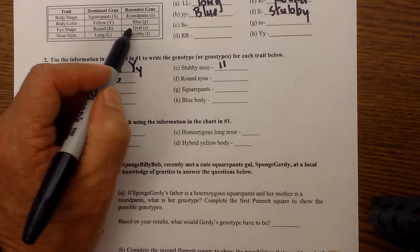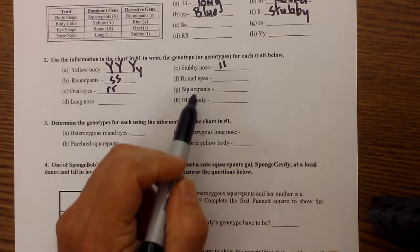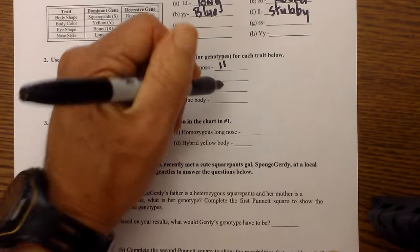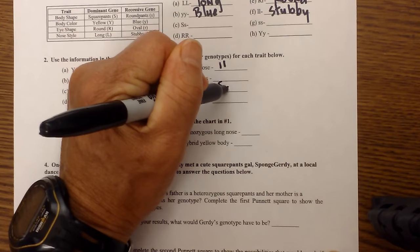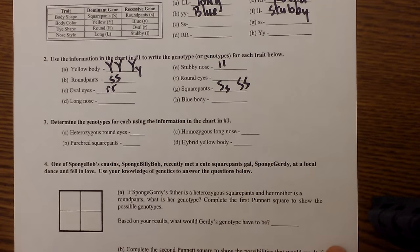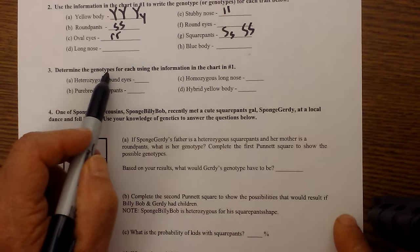Oval eyes, oval are also recessive so that will be little r little r. And let's do one more that's dominant. Square pants is dominant so it can be written big s little s which is heterozygous or big s big s which is a homozygous for the dominant trait. And finally, the last thing, let's go determine the genotypes,